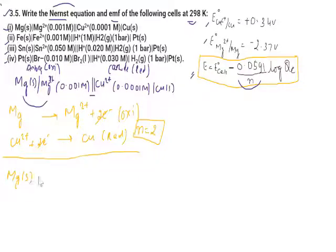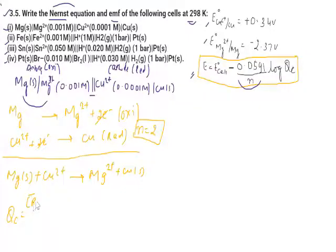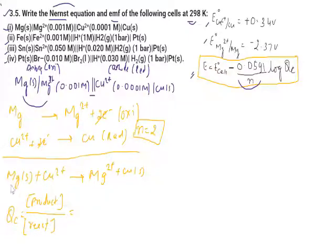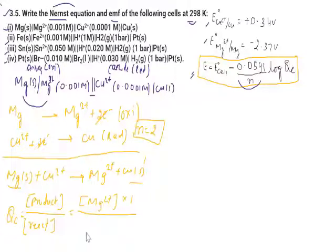The overall cell reaction is: Mg(s) + Cu²⁺(aq) → Mg²⁺(aq) + Cu(s). Now we need to write QC — the reaction quotient — which is the concentration of products over reactants in aqueous or gaseous form.